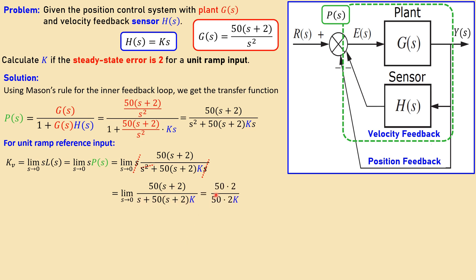So actually we get 50 times 2 over 0 plus 50 times 2K, which is actually shown here. So it means actually 100 over 100K, which is just 1 over K. That's actually the expression.